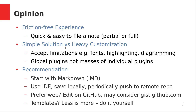There's a choice between a simple solution or heavy customization. With a wiki, you're accepting some limitations — no custom fonts, probably no highlighting, not great support for diagramming. You may be able to use a few global plugins. But in general, it's still a pretty simple experience. What you don't want is masses and masses of individual plugins like with Obsidian. You want a simple experience. You want people to focus on the clarity of the message instead of getting bogged down with customizing fancy colors and highlighting.